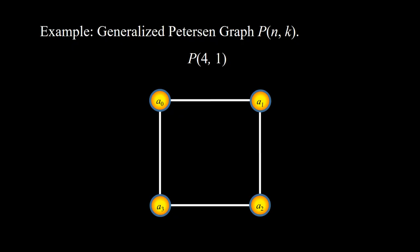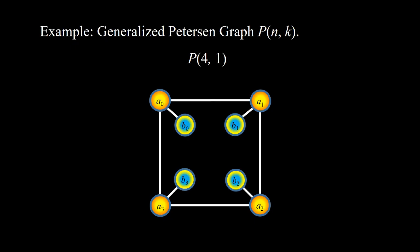Next, the generalized Petersen graph P(4,1). Here is the cycle C4 consisting of four vertices. These are the B vertices — four of them: B0, B1, B2, and B3. Because K is 1, B0 is adjacent to B1, B1 is adjacent to B2, B2 is adjacent to B3, and B3 is adjacent to B0.